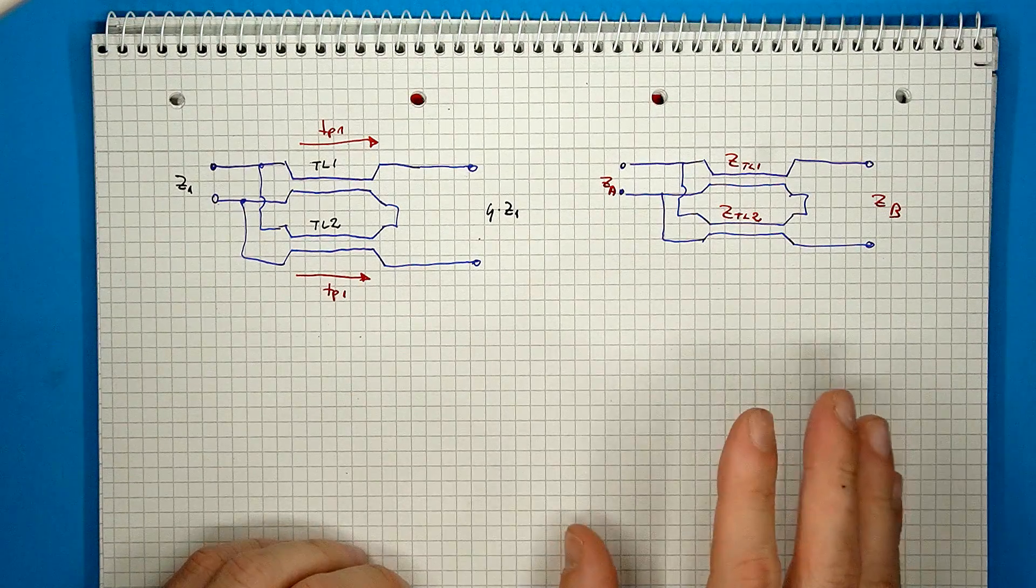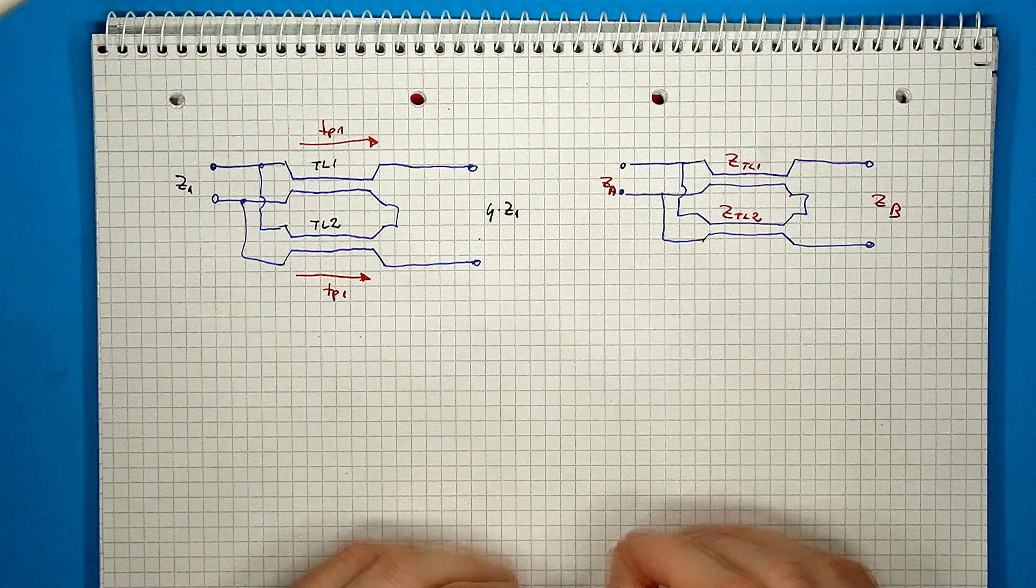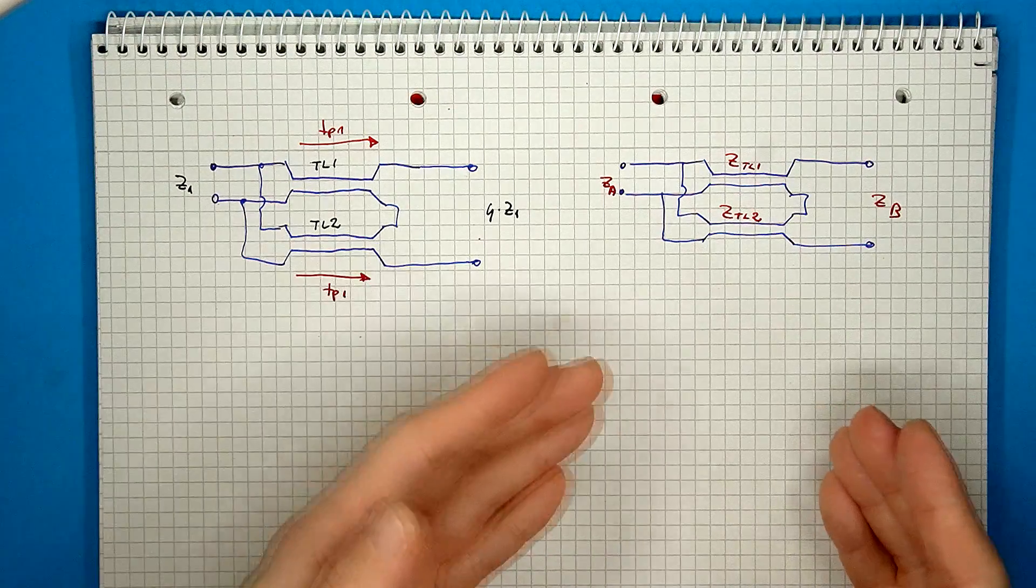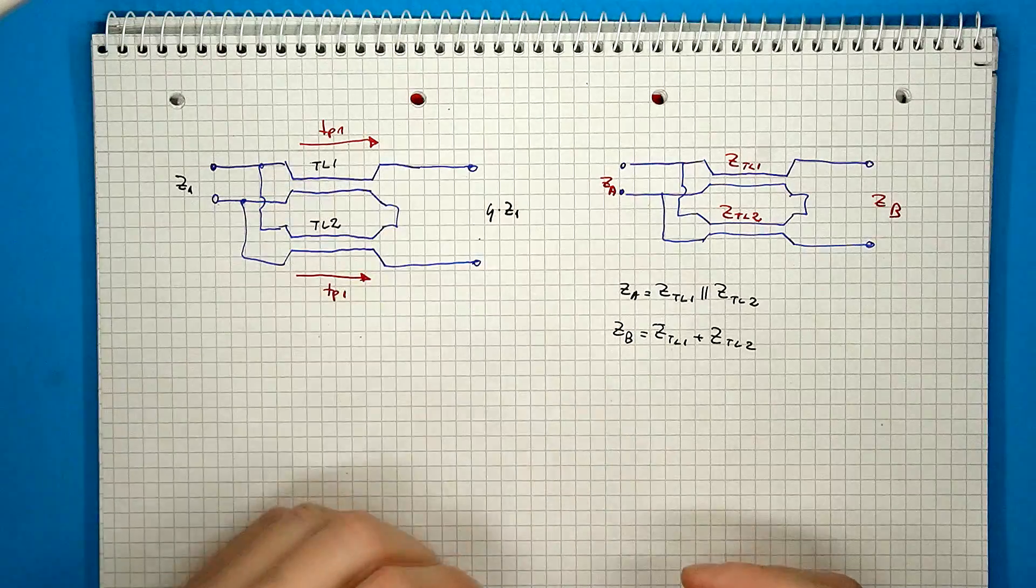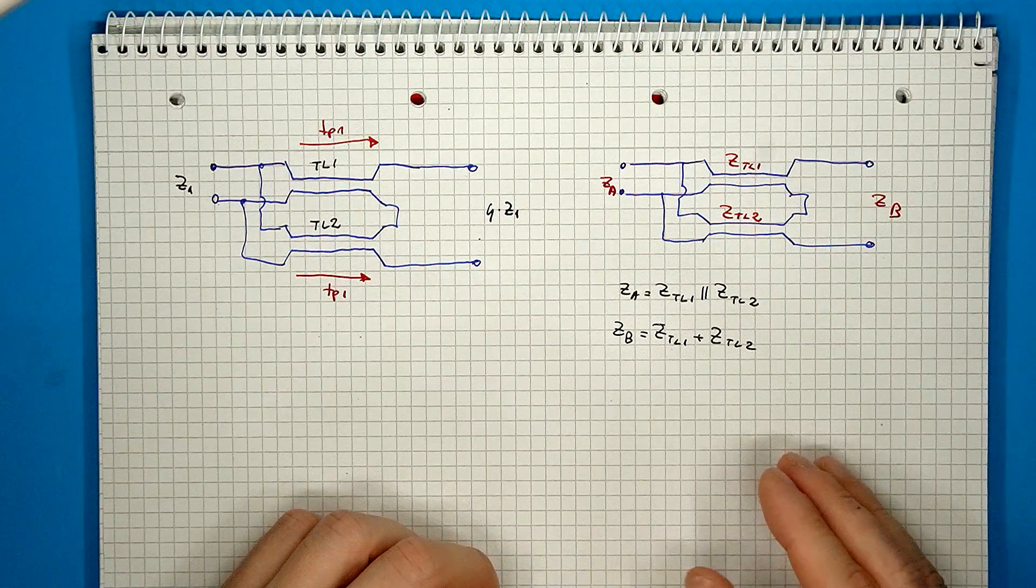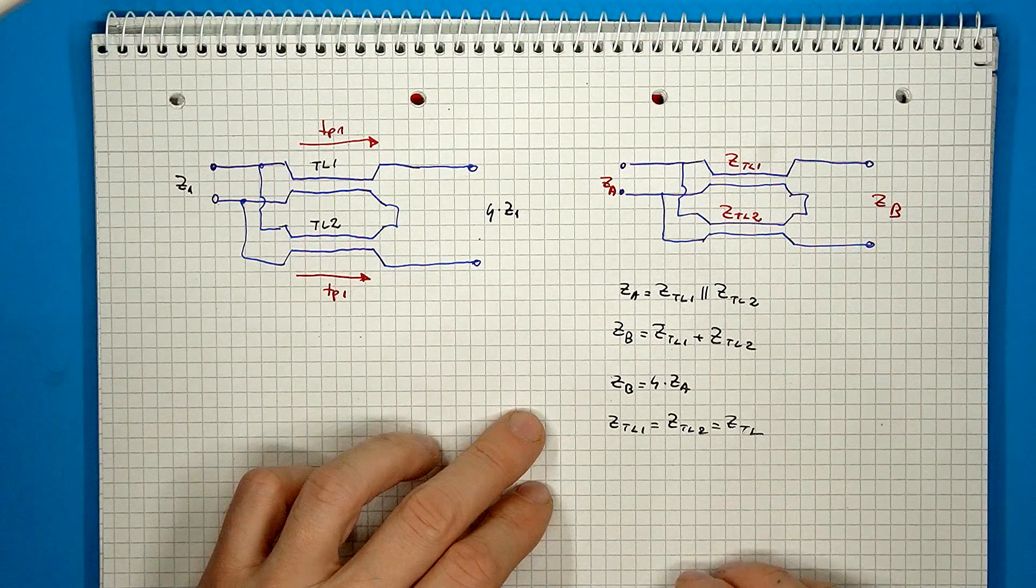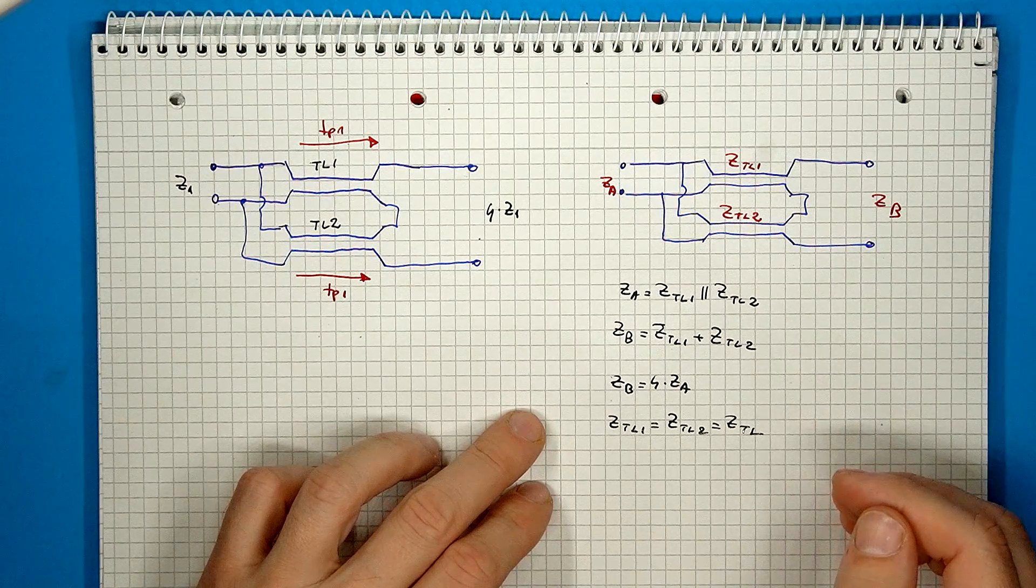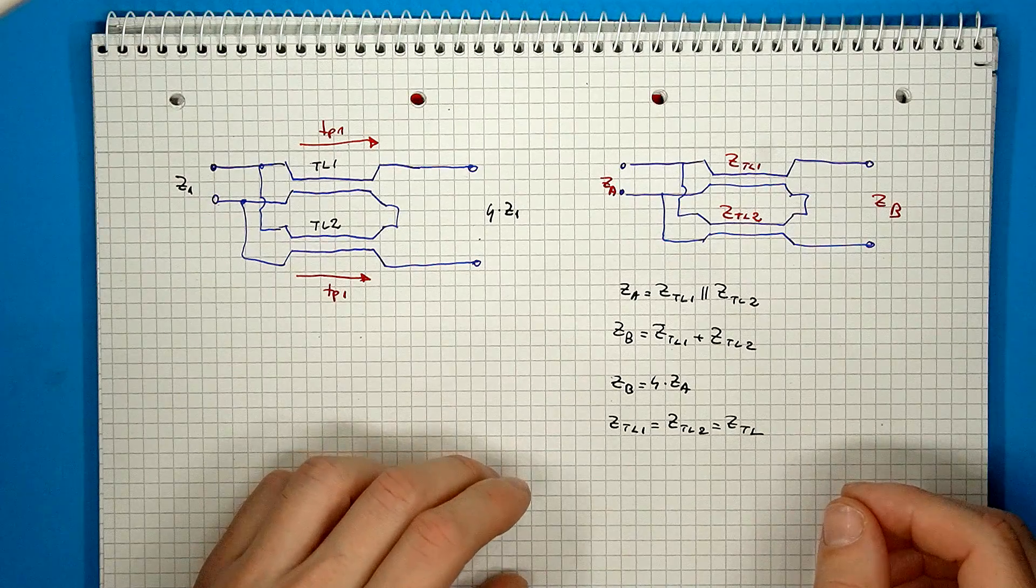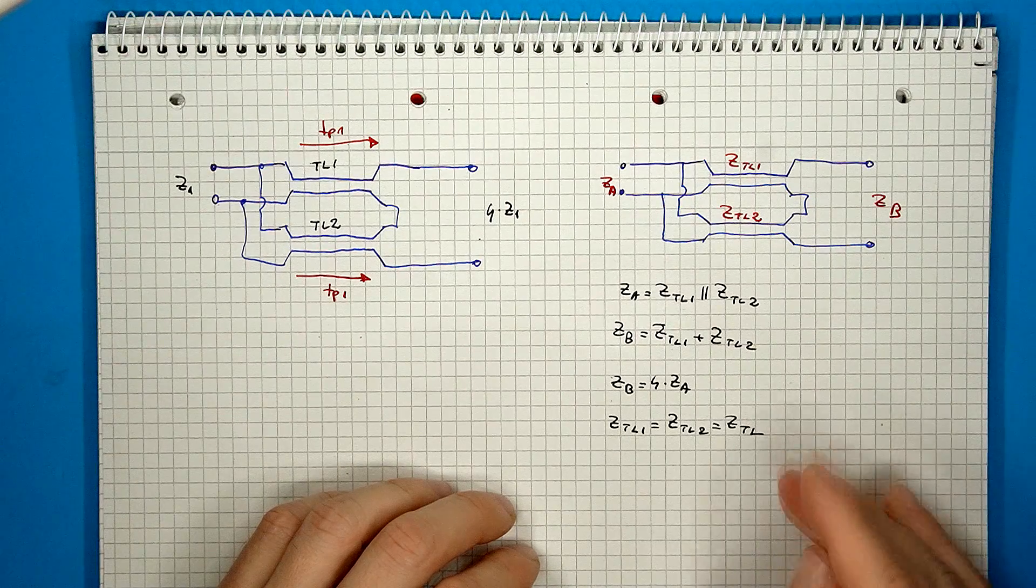The other important aspect to focus on when talking about transmission lines is impedance matching. This is important to prevent reflections and to have an ideal lossless transmission of signals. So the impedance seen on the left side is the two transmission lines in parallel, and the impedance seen from the other side is the two transmission lines in series.